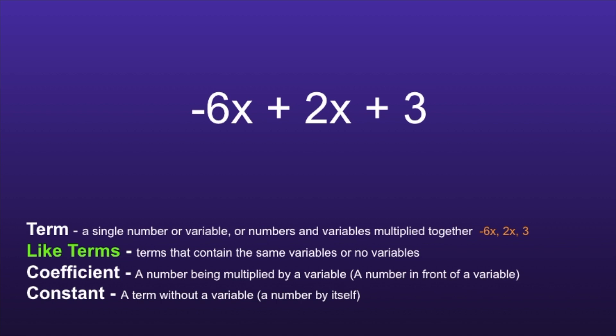Like terms are terms that contain the same variables or no variables. In this expression, the like terms would be negative 6x and 2x.